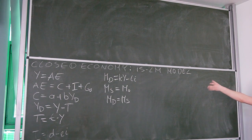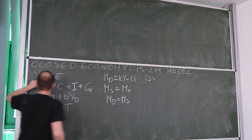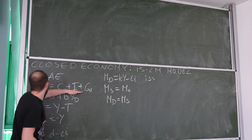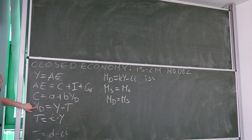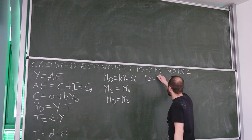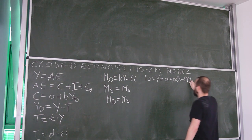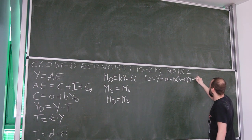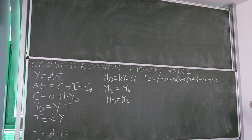By condensing the equations describing the market for goods and services, we obtain the IS curve. First, I use the equilibrium condition and substitute aggregate expenditures into it, then substitute taxes to get disposable income, then substitute consumption. We get that y equals a plus b times (1 minus t) times y. We then substitute for investment and add government spending. This linear equation shows all combinations of income and interest rate for which there is equilibrium in the market for goods and services.